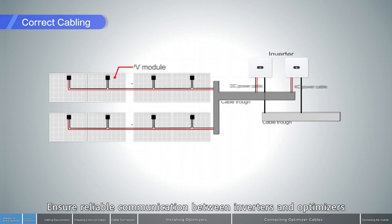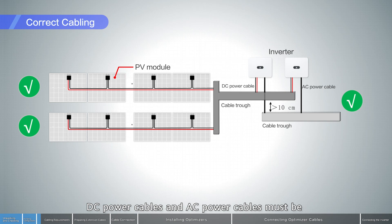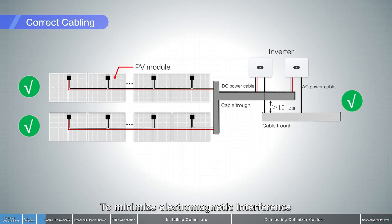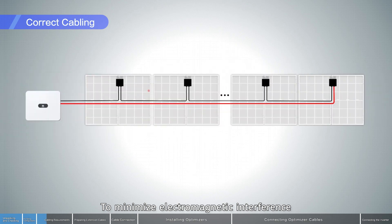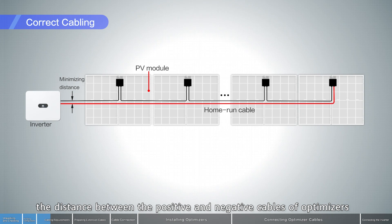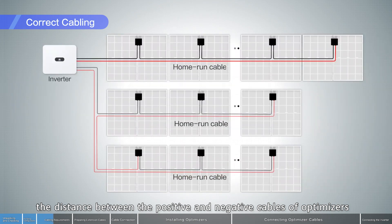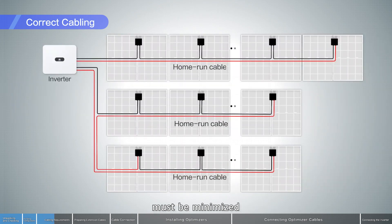Ensure reliable communication between inverters and optimizers. DC power cables and AC power cables must be routed in different troughs with a spacing of more than 10 cm to minimize electromagnetic interference. The distance between the positive and negative cables of optimizers must be minimized.